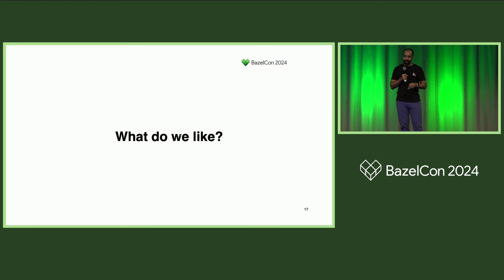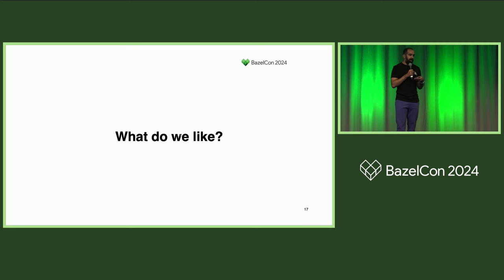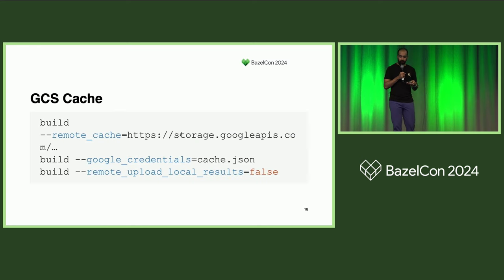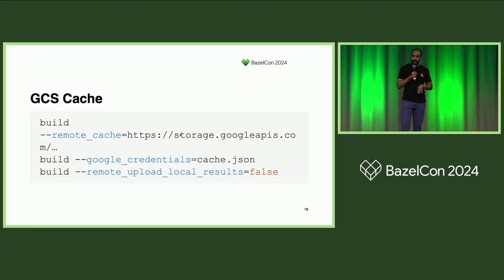So what do we like? There's a lot about Bazel that's good for everyone, and our experiences qualify a lot there. But I also want to talk about what's good for a small company getting on board. Number one is GCS cache. Having GCS available as a remote cache was a boon to get off the ground.